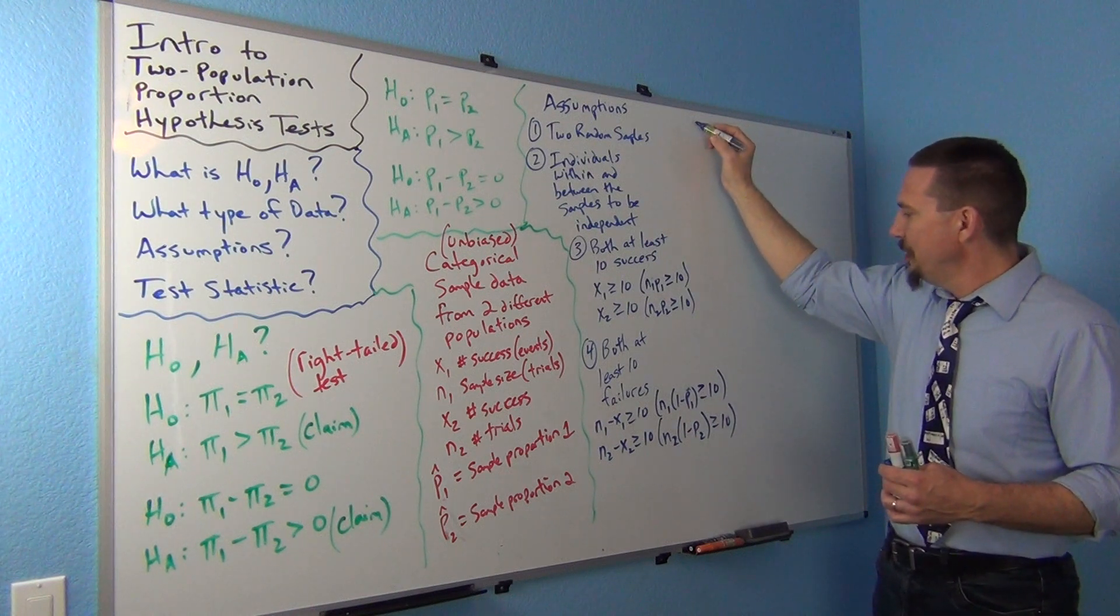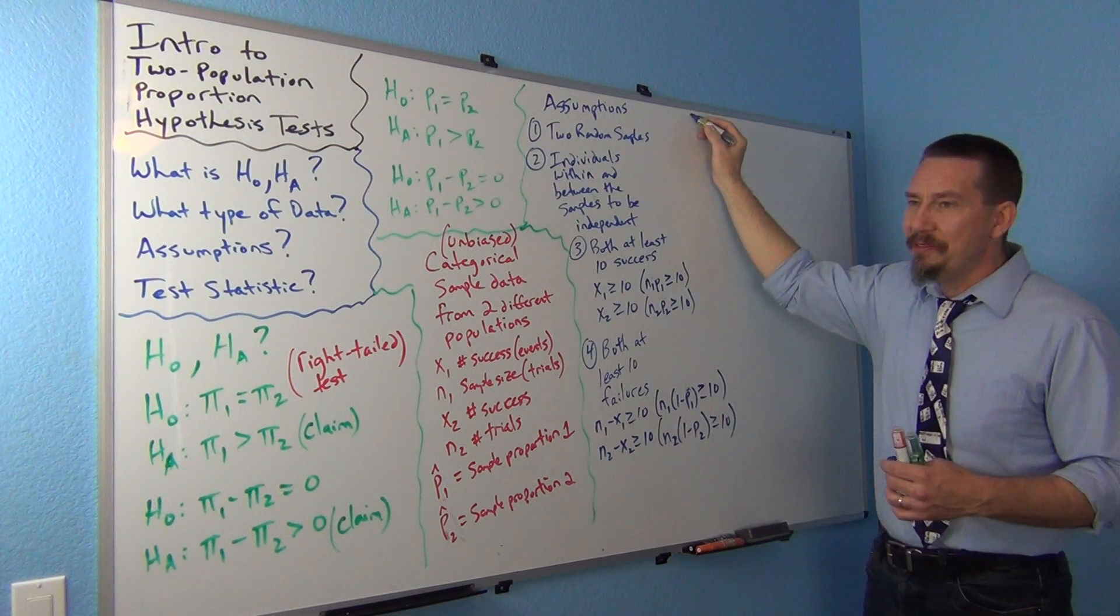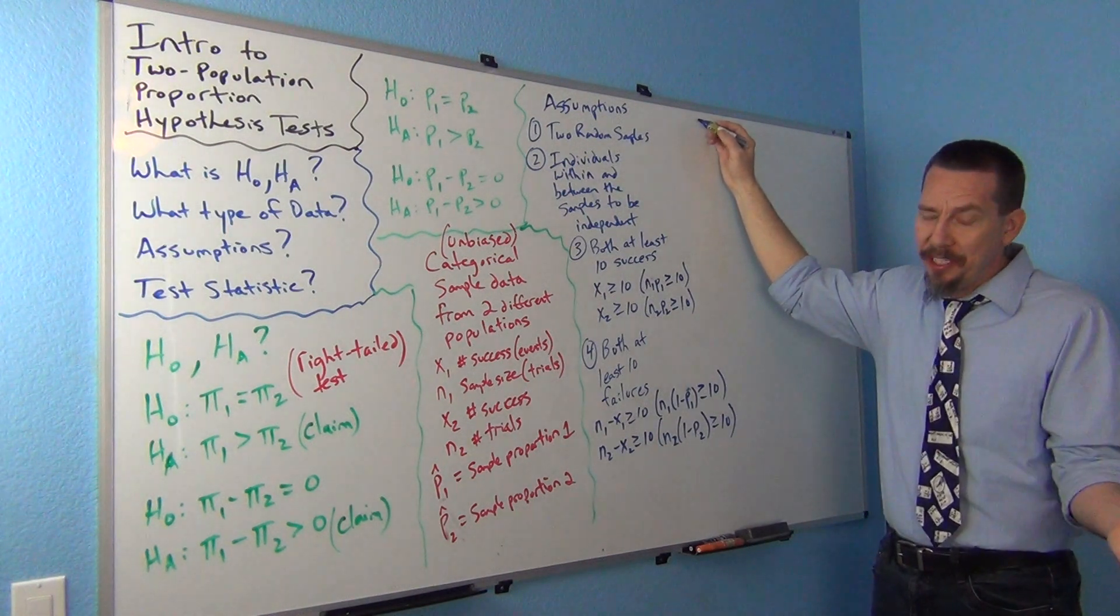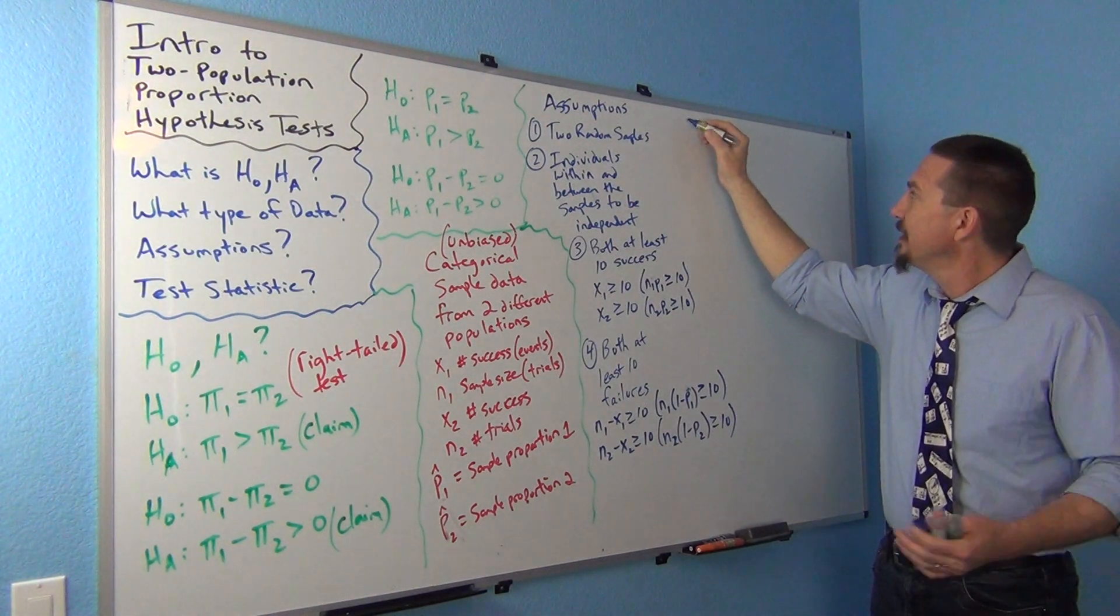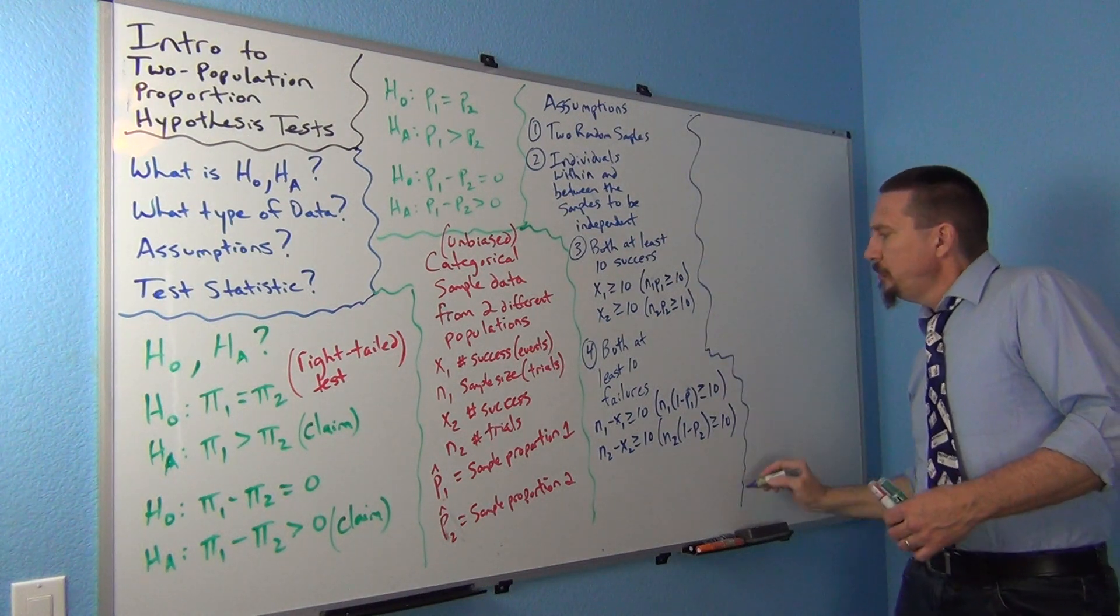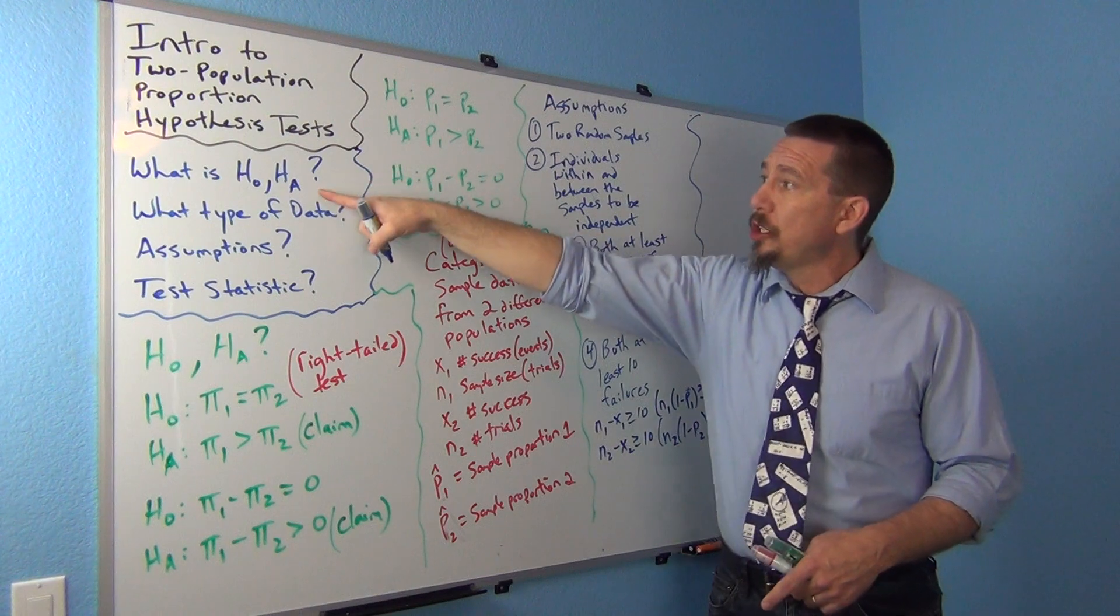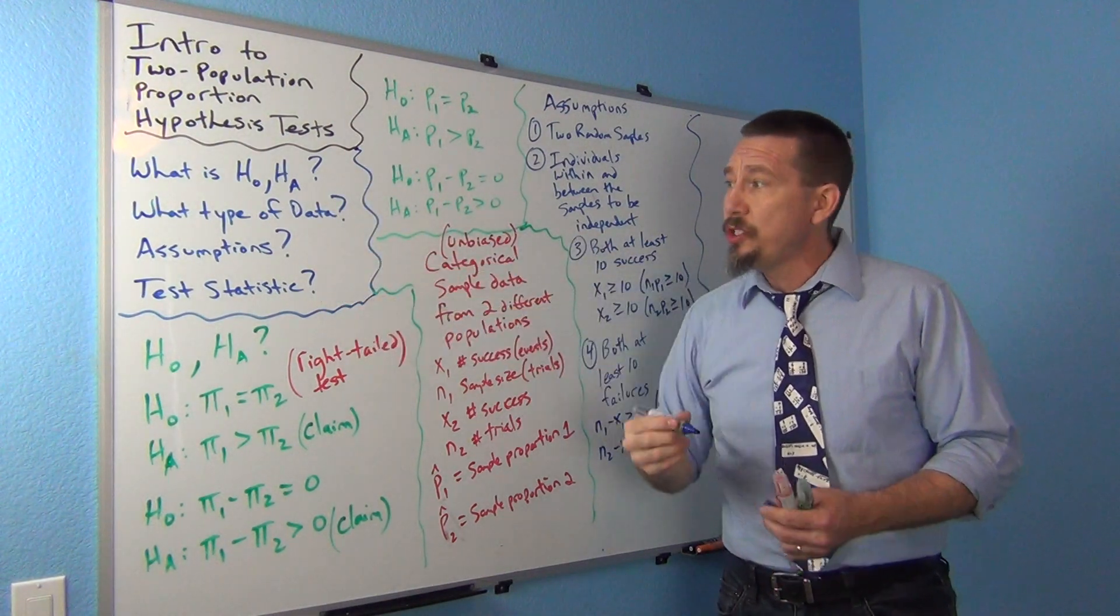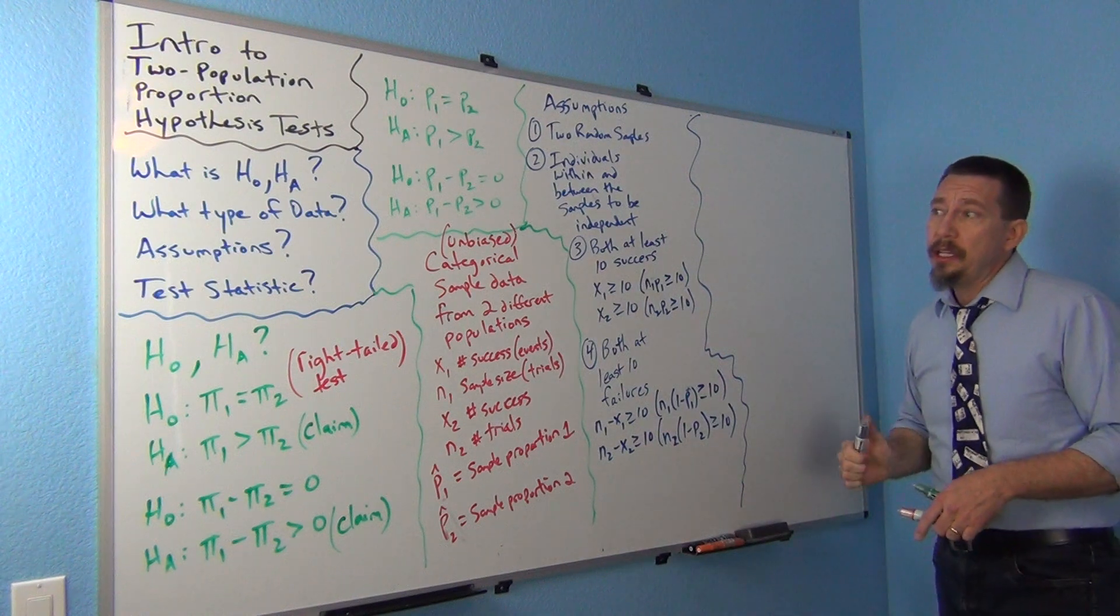So, yeah, don't worry too much about that. Did I have at least ten people that smoke in both data sets, and did I have at least ten people that don't smoke in both my data sets? Okay. Now, let's go. We got null and alternative hypothesis, we got type of data assumptions.